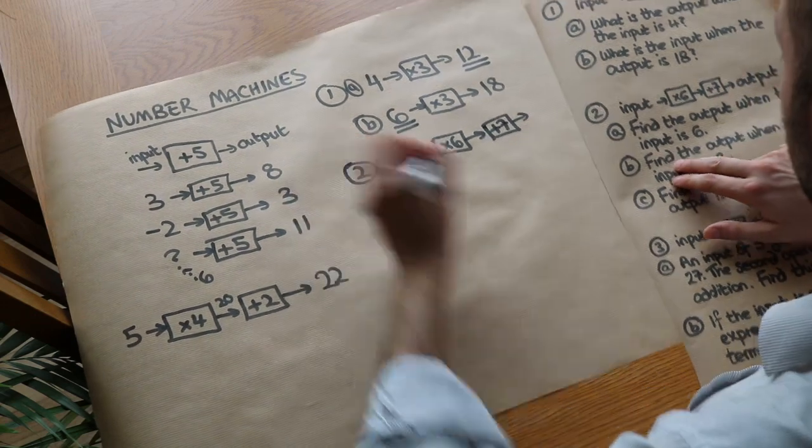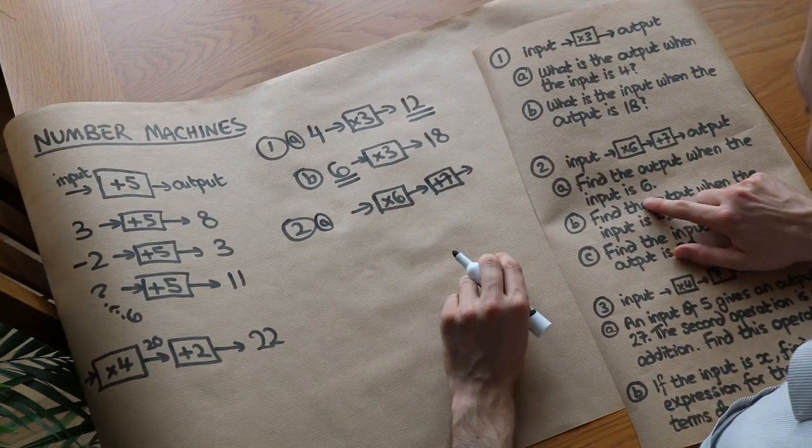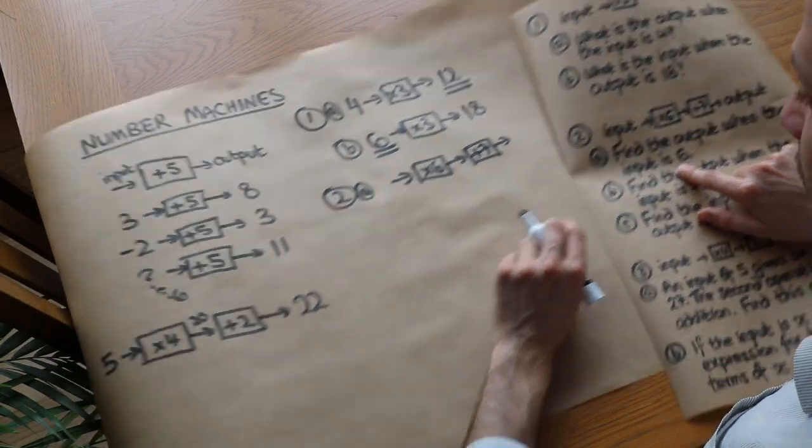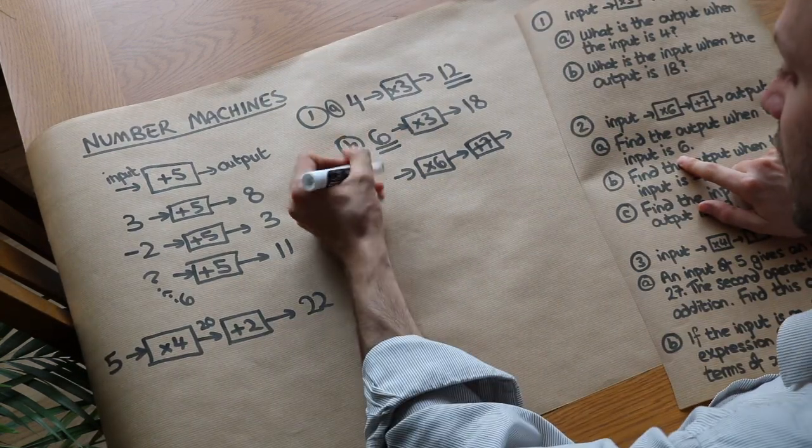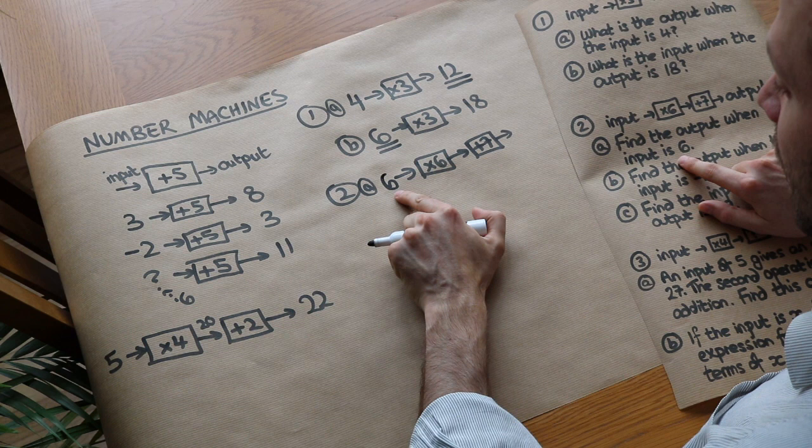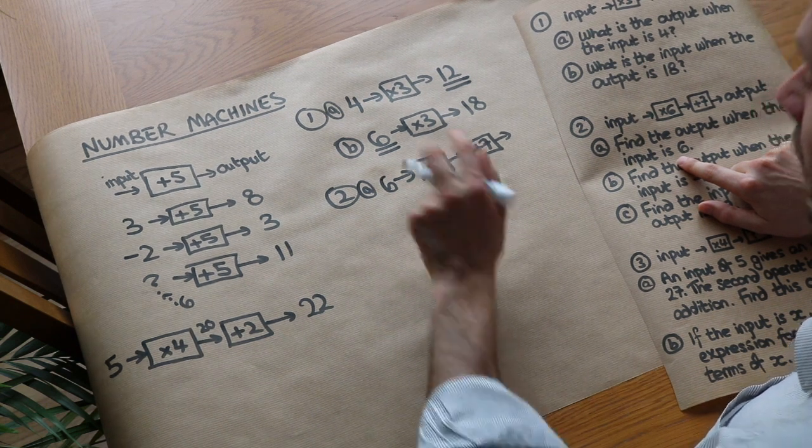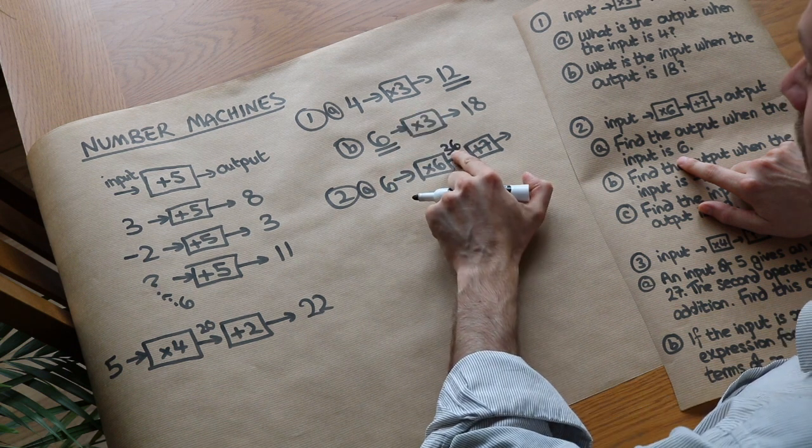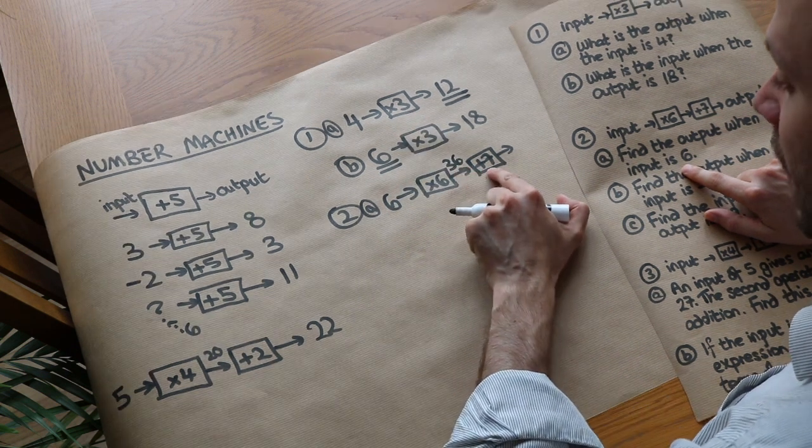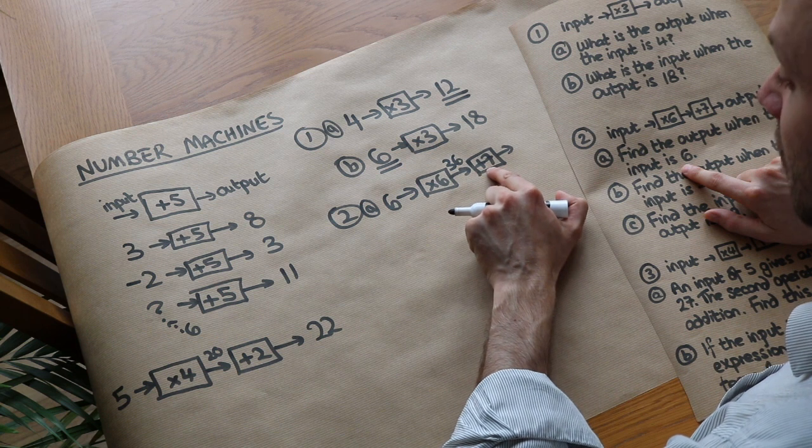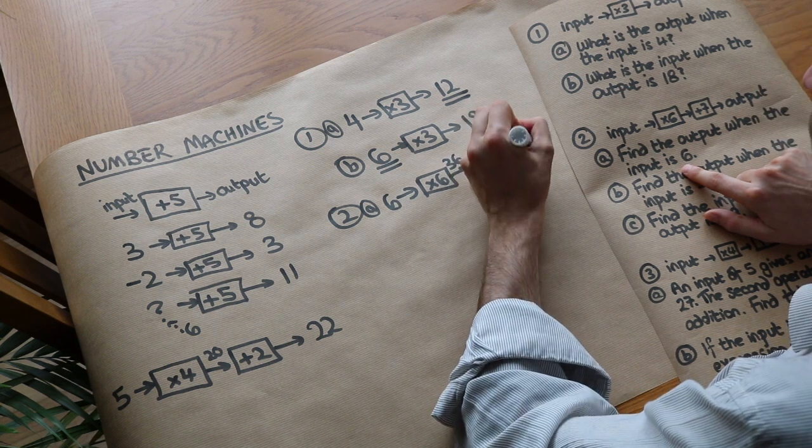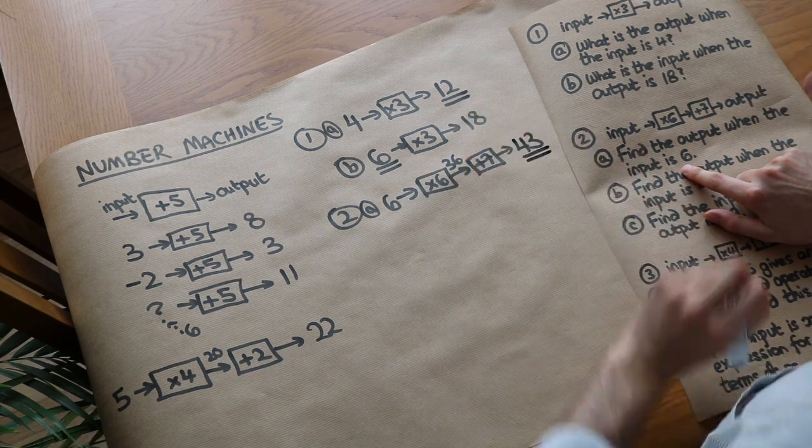So part A is, find the output when the input is 6. So the input on the left is 6, and then let's feed it through these two number machines. We've got 6, you times it by 6, that gives you 36. And the 36 is fed as the input into this number machine. 36 plus 7 is 43 and that is the answer.